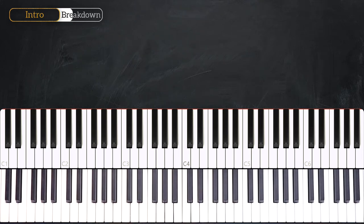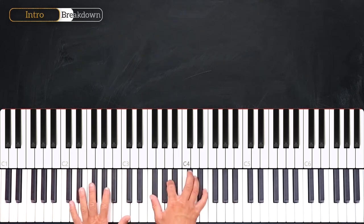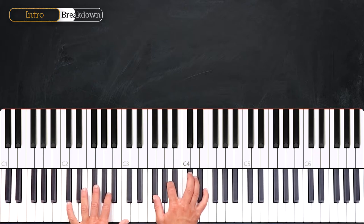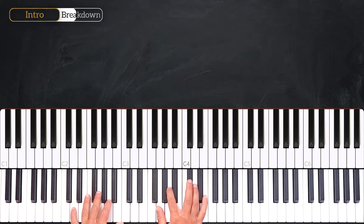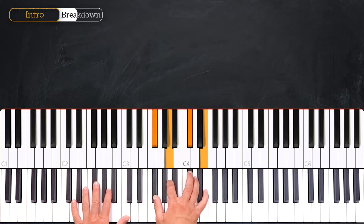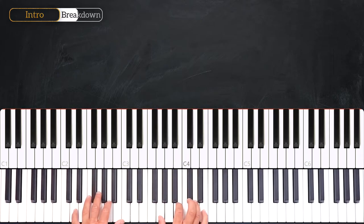So here is the rhythm we'll use. On the D major 9, we'll start by playing hands together. Then right, left, left, right, left, and together. So together, right, left, left, right, left, together.